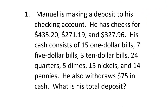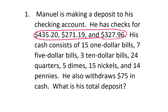Here's our first example. Manuel is making a deposit to his checking account. He has checks for $435.20, $270.119, and $320.796. Adding those together gives us $1,034.35.